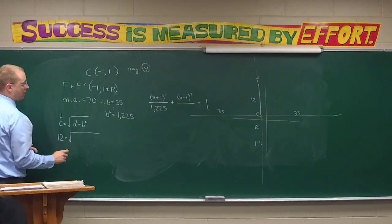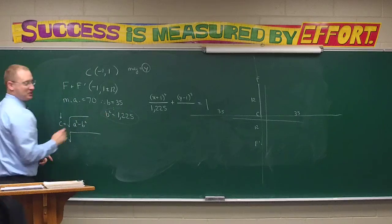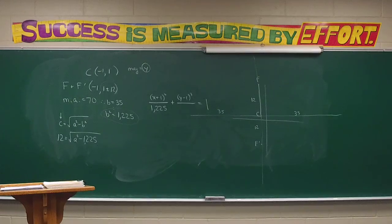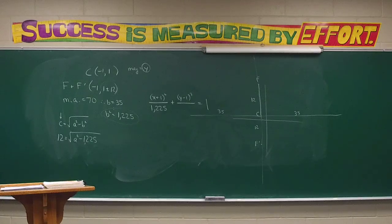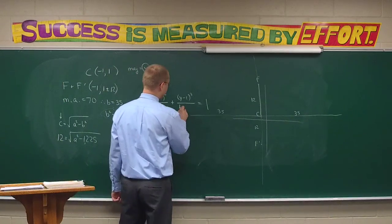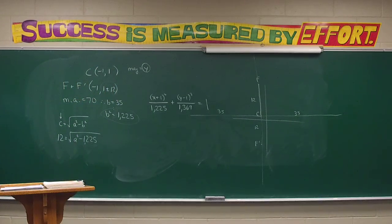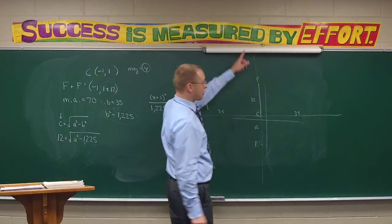So 12 = √(a² − 1225). Squaring: 144 = a² − 1225, which gives a² = 1369. Taking the square root, a = 37. So the whole major axis is 74 units long.